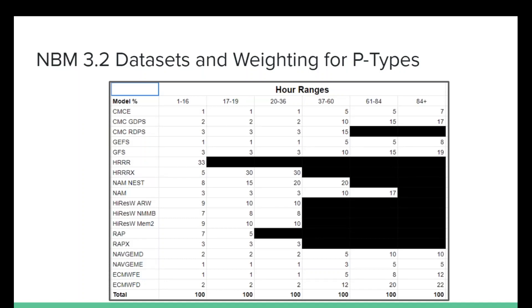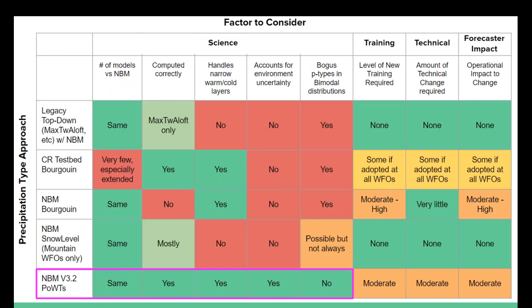A quick overview of NBM 3.2 datasets: in the short term, the HREF is really the dominant player, along with other higher-resolution models. As you go farther out in time, those higher-resolution datasets drop off and you're relegated to the GFS, European deterministic, and ensemble means. Once you get out to the day four through seven range, the European ensemble mean and deterministic account for at least a third of your p-type weighting.